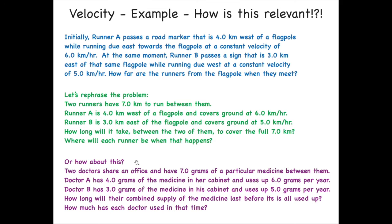Let's rephrase it one more time. Except now we'll do it instead of runners. Let's say we have two doctors that share an office and have seven grams of a particular medicine between them. Doctor A has four grams in her cabinet and uses up six kilograms per year. That's the rate she goes through that medicine. Doctor B has three grams of medicine in his cabinet and uses up five kilograms per year. If they're willing to share the medication, how long will their combined supply of medicine last before it is all used up? And how much will each doctor have used in that time? Who will have borrowed from whom? It's the exact same question, and the exact same math would solve it.